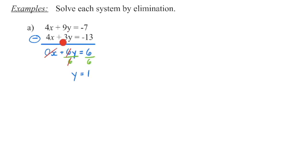9 minus 3 gives me 6y. Make sure you watch your signs here — it's negative 7 minus negative 13. Minus a negative is like a positive, so it's negative 7 plus 13 gives us 6. Then I'm going to divide out that 6 to isolate y, and I do the same thing over here to keep it balanced, which means I have a y coordinate of 1.